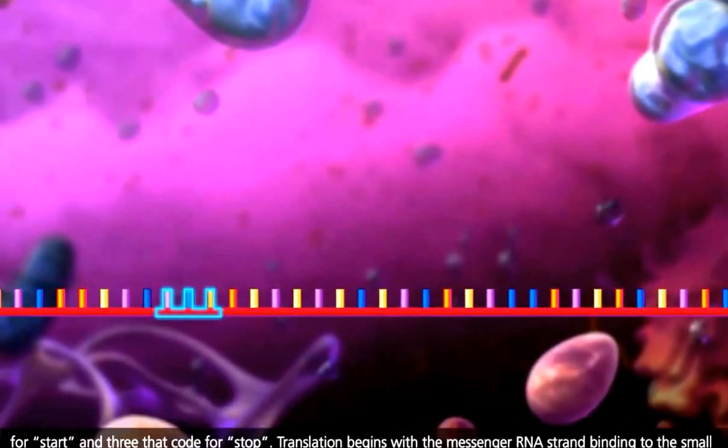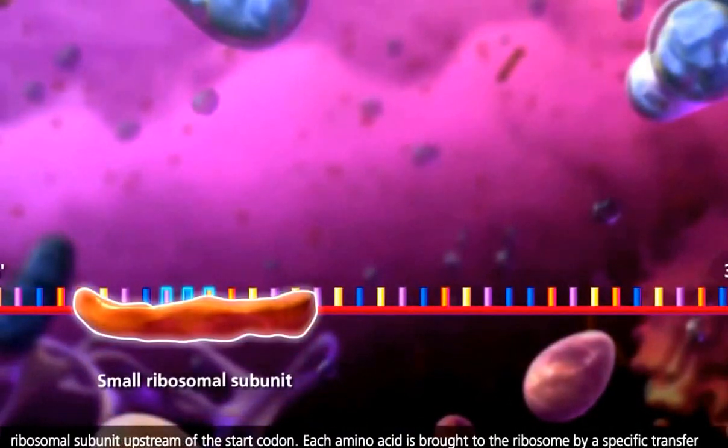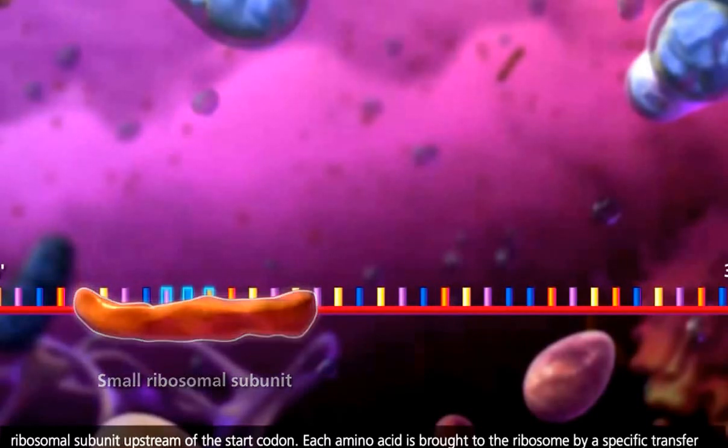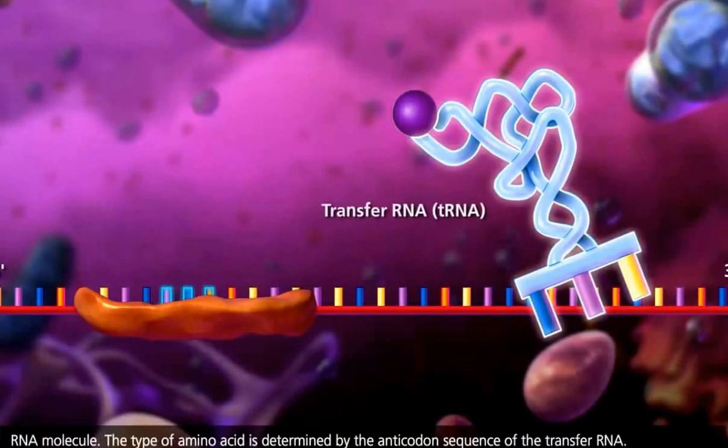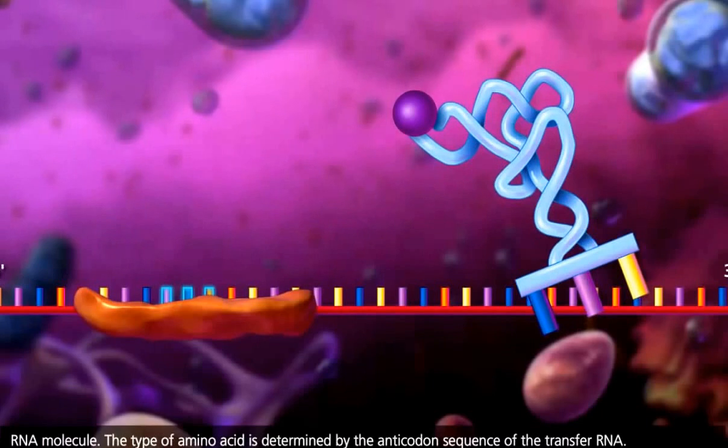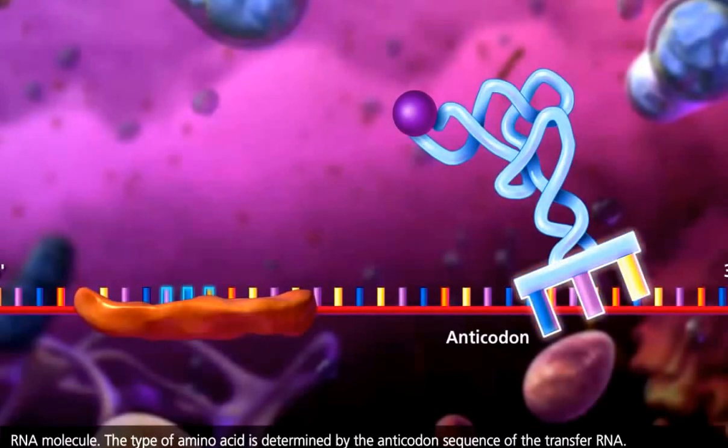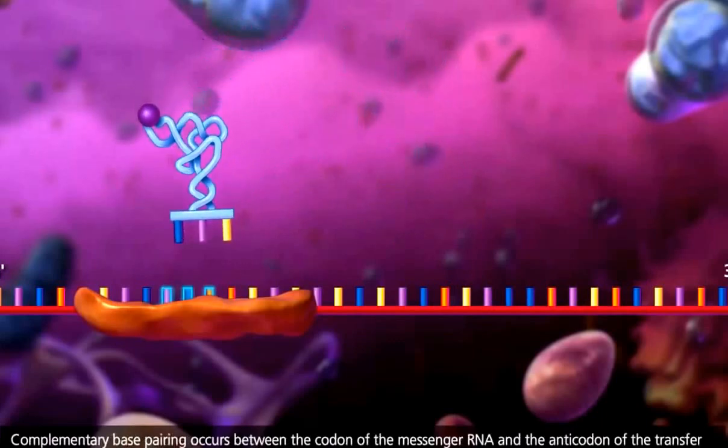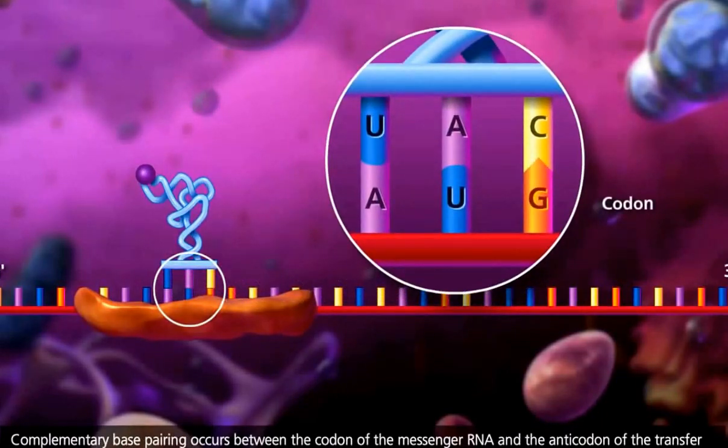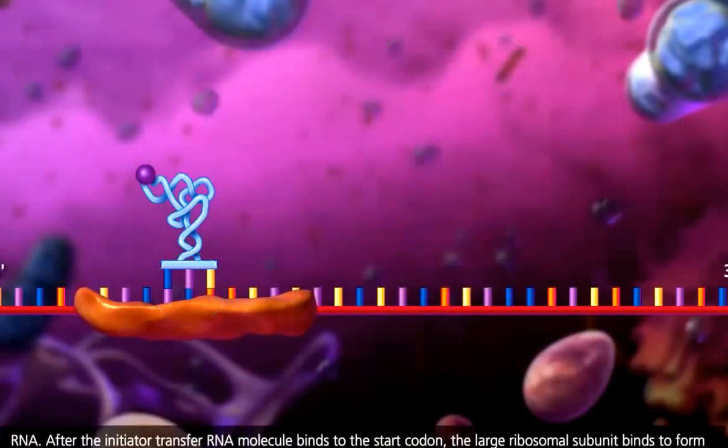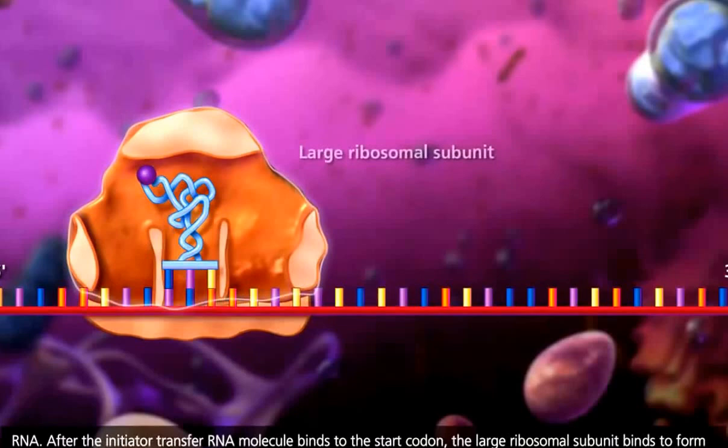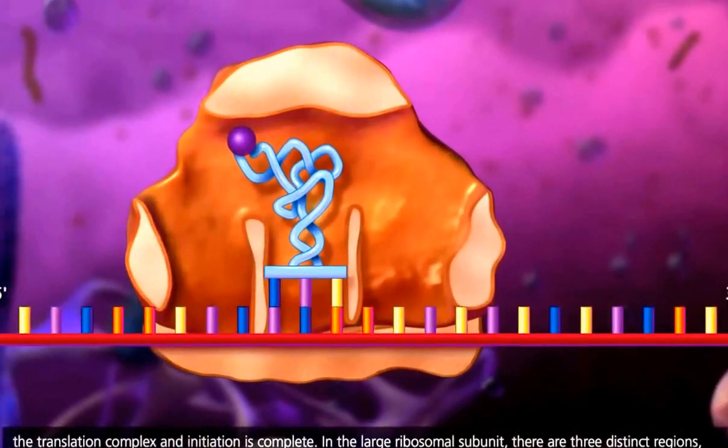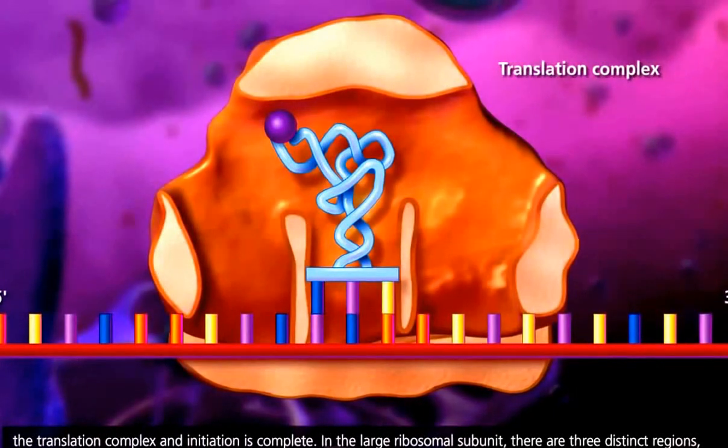Translation begins with the messenger RNA strand binding to the small ribosomal subunit upstream of the start codon. Each amino acid is brought to the ribosome by a specific transfer RNA molecule. The type of amino acid is determined by the anticodon sequence of the transfer RNA. Complementary base pairing occurs between the codon of the messenger RNA and the anticodon of the transfer RNA. After the initiator transfer RNA molecule binds to the start codon, the large ribosomal subunit binds to form the translation complex and initiation is complete.